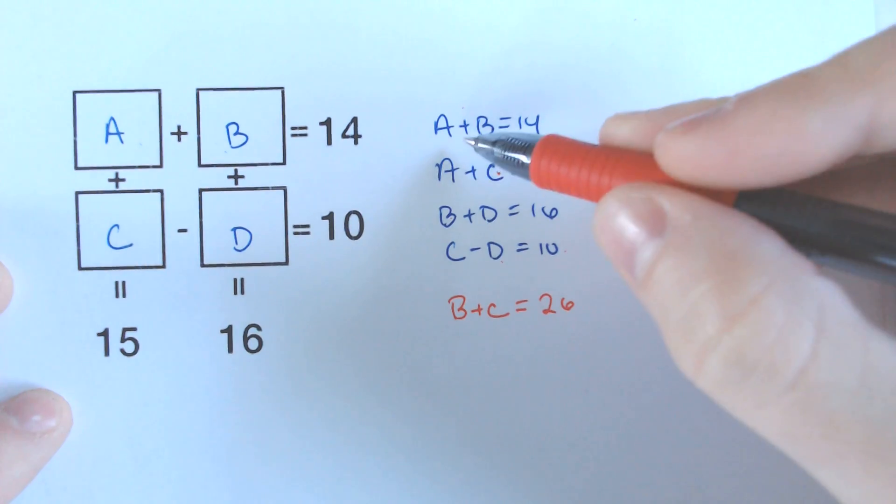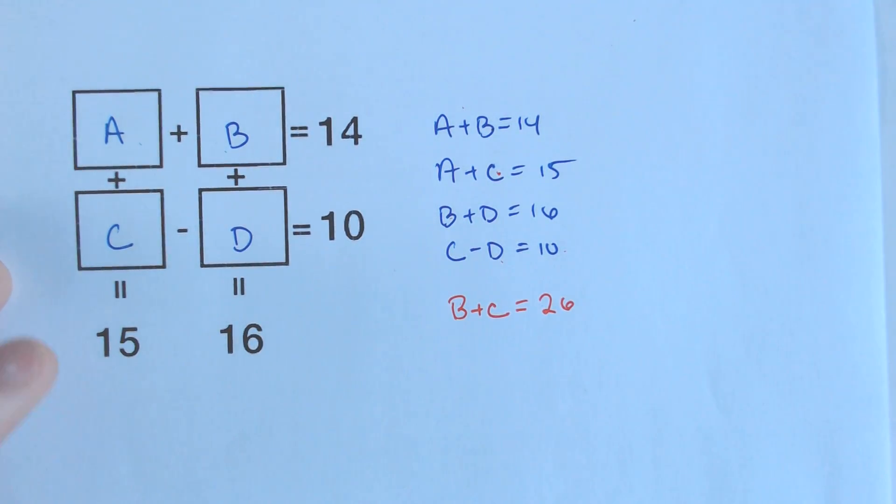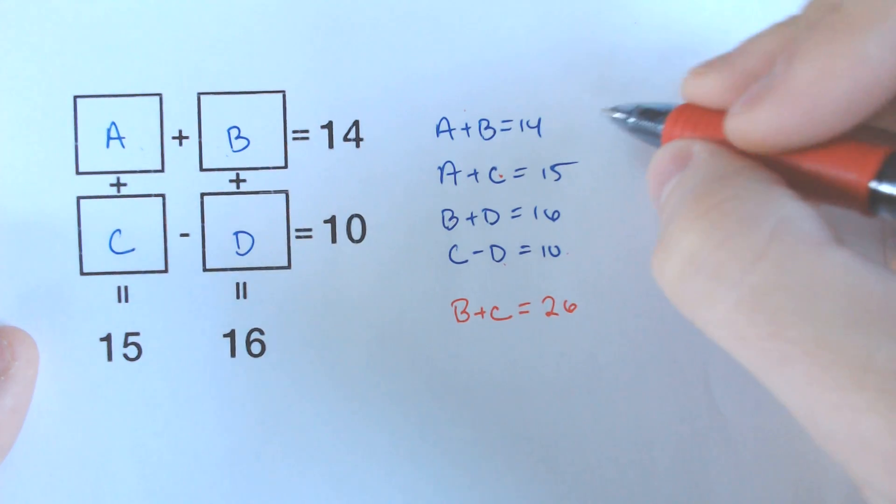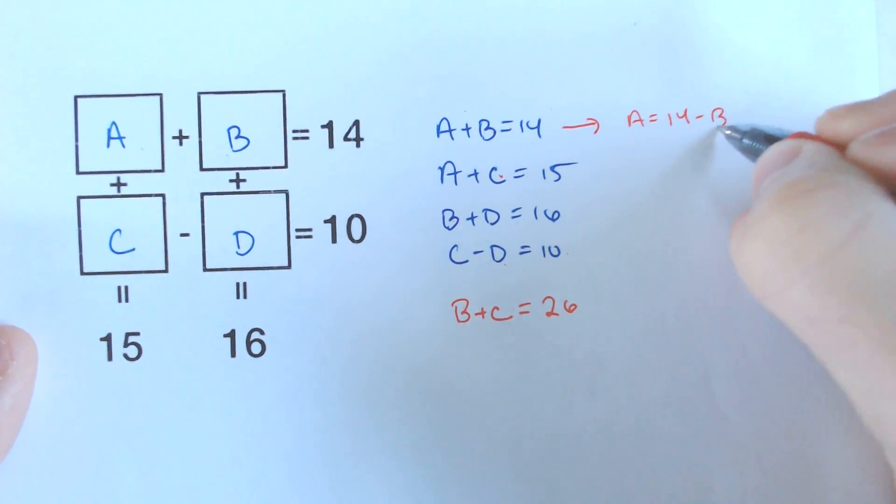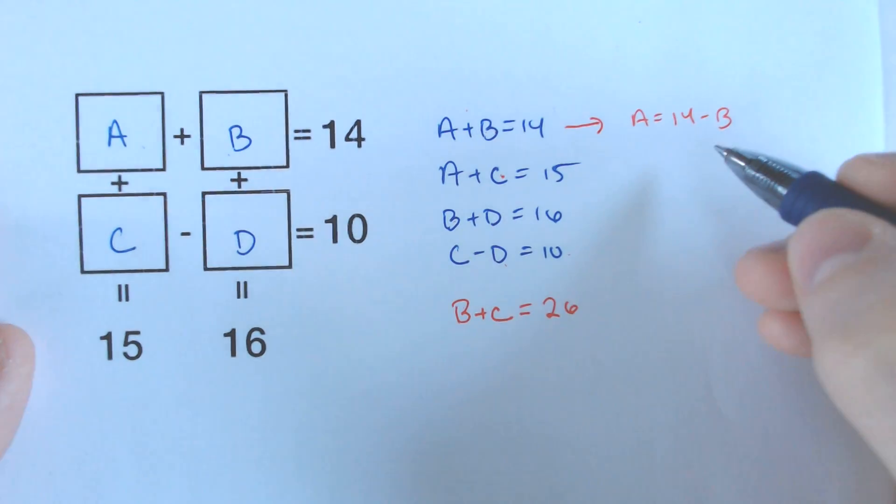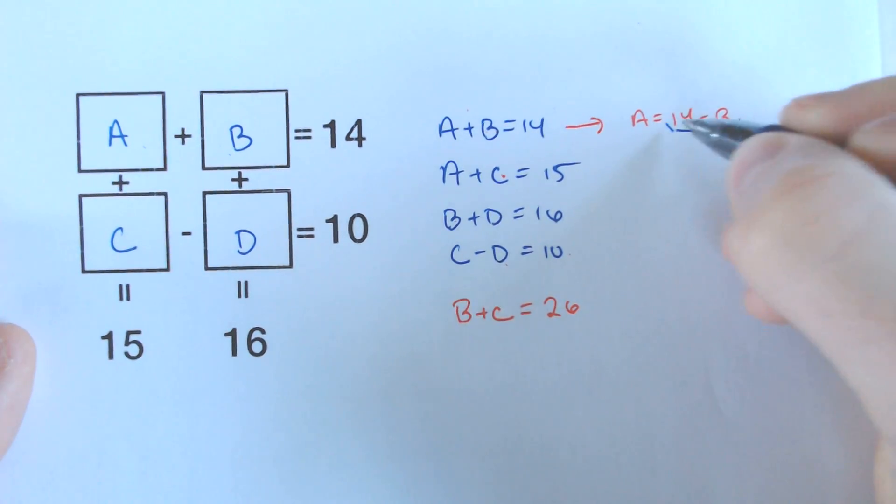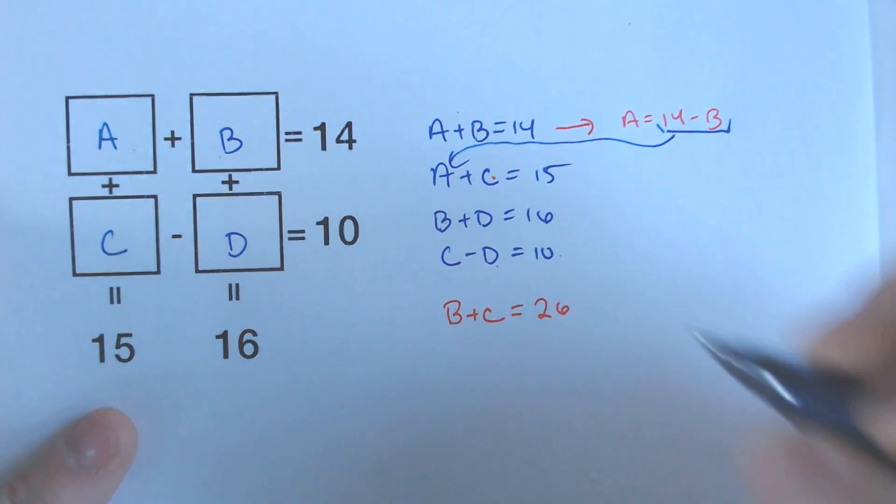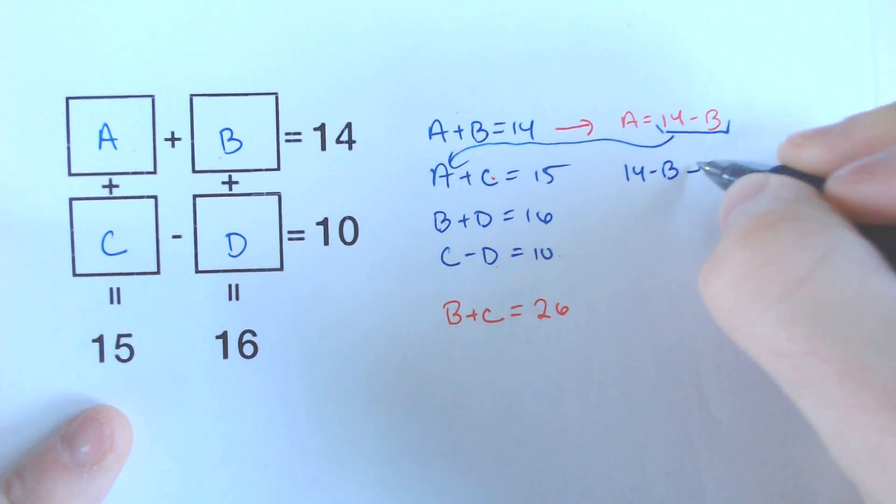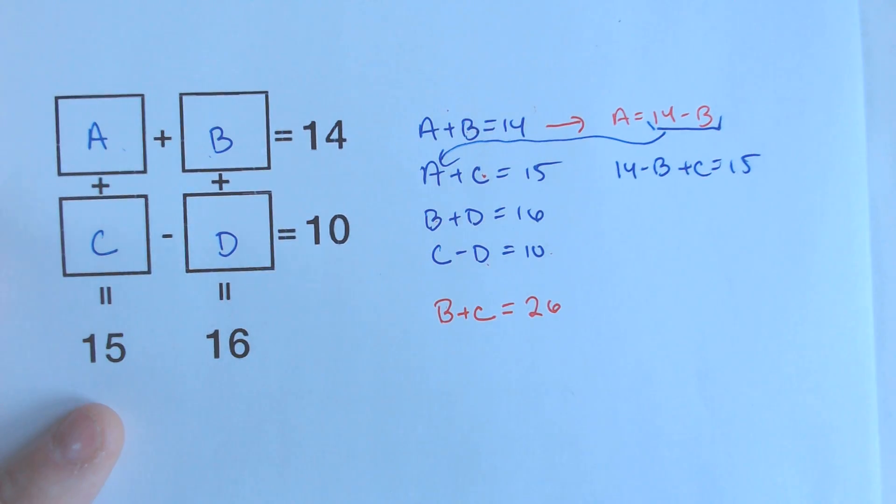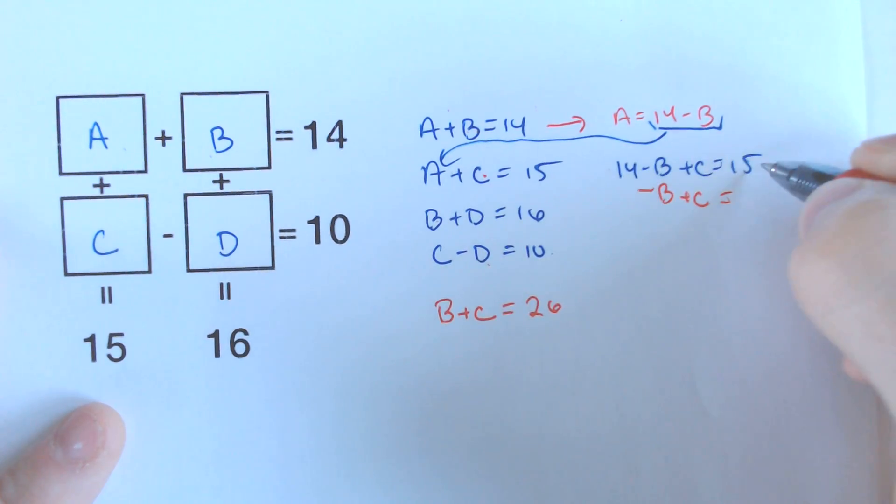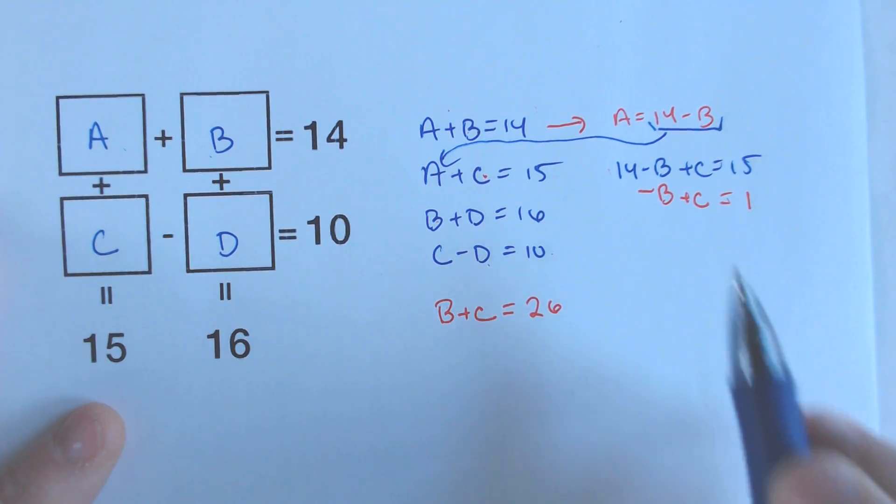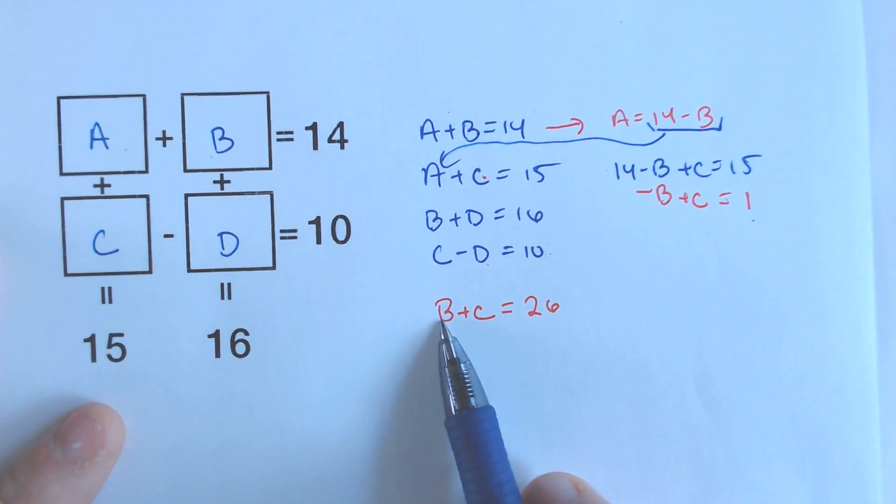So here we have a B and a C, but these A's are the pesky ones. So maybe I could either eliminate or substitute to get rid of those A's. And I could do that pretty easily by realizing if I manipulate this equation, if I subtract the B over, I would know that A is equal to 14 minus B. If A is equal to 14 minus B, I can substitute that in for this A. If I plugged this in for that A, you would have 14 minus B plus C is equal to 15. And if I simplify that a little bit, I get negative B plus C equals subtracting the 14 over, 1. Now I have a B and a C and a 1 and a B and a C and a 26.